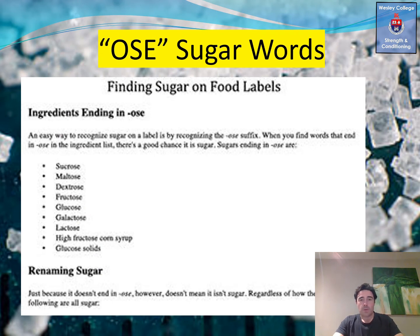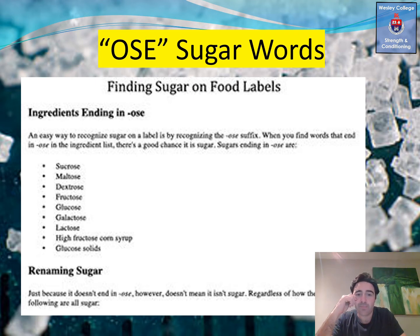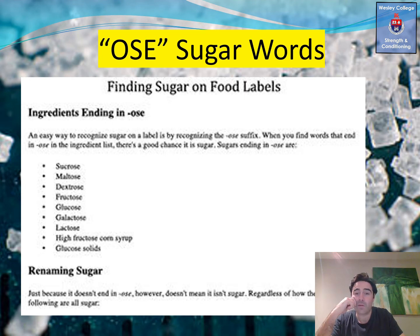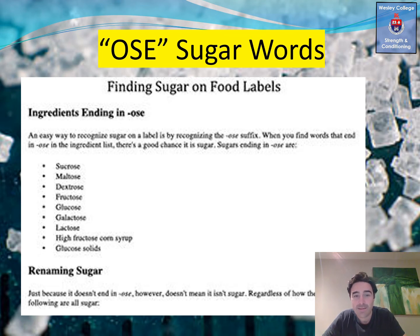Finding sugar on food labels: an easy way to recognize sugar on a label is by the '-ose' suffix. When you look at the back of a product in the ingredient section and find a word ending in '-ose', there's a good chance there are high levels of sugar. A rule I follow: in an ingredients list, whatever the food contains most of will be listed first. So if you see one of these '-ose' words in the top five ingredients, it's laced with sugar. Watch out for sucrose, maltodextrin, maltose, dextrose, fructose, glucose, galactose, and lactose — they're all very high in sugar.